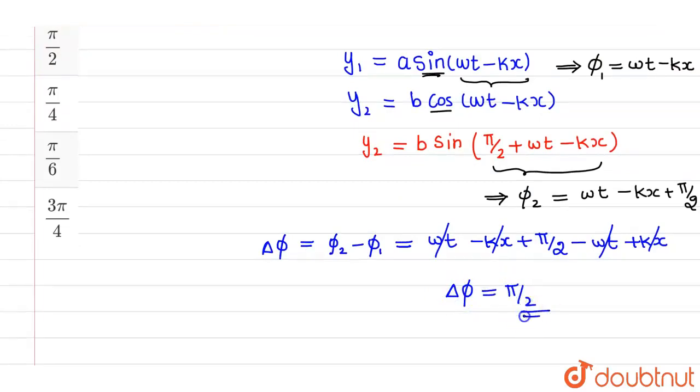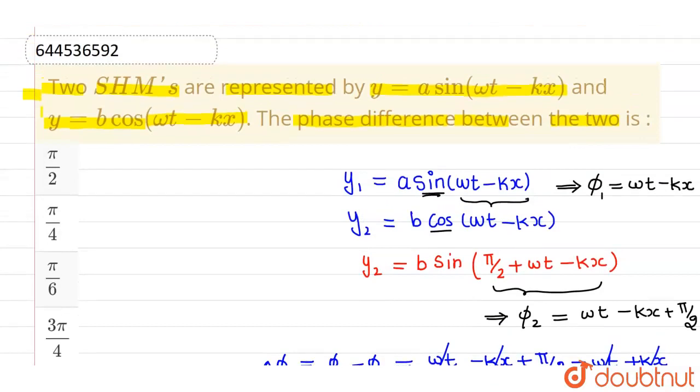So this is the phase difference between the two equations which is given in option 1. So option 1 is correct and all other options are incorrect. I hope you understood. Thank you.